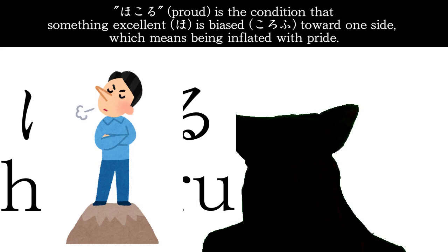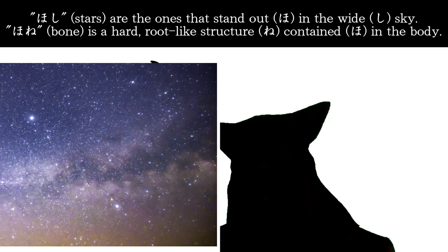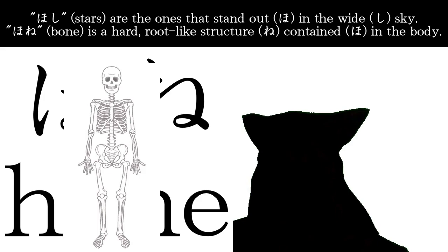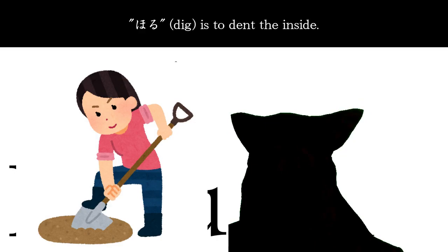Hoshi, which is stars, are the ones that stand out in the wide sky. Hone, which is bone, is a hard, root-like structure contained in the body. Horu, which is dig, is to dent the inside.